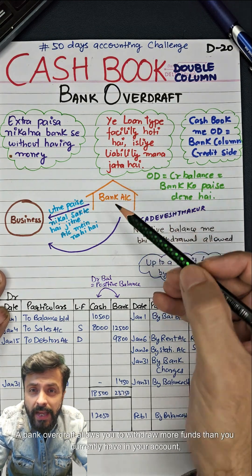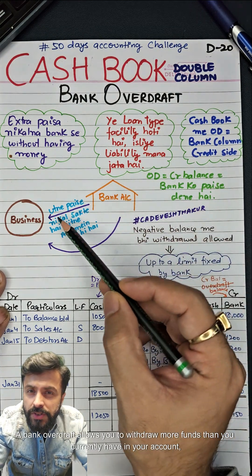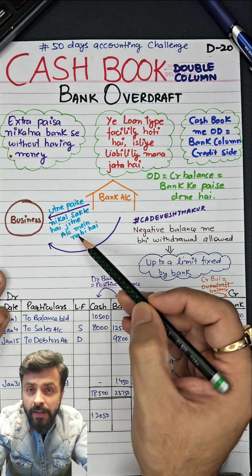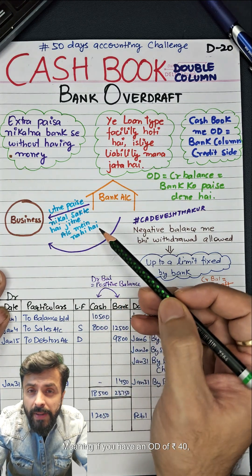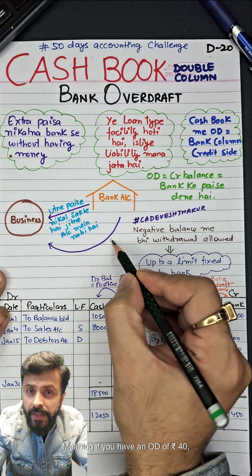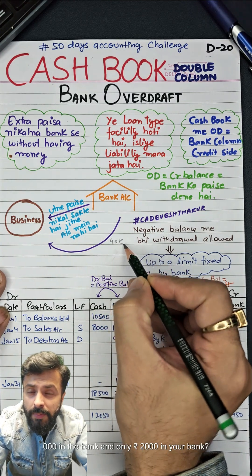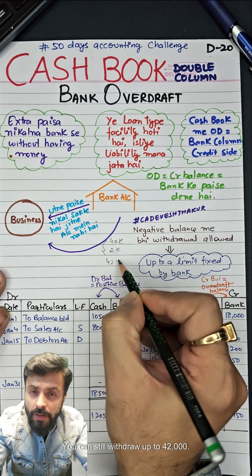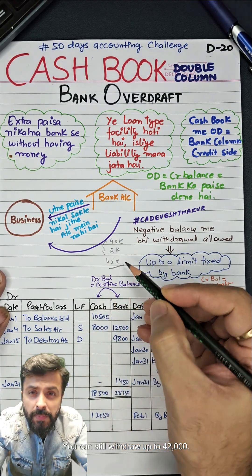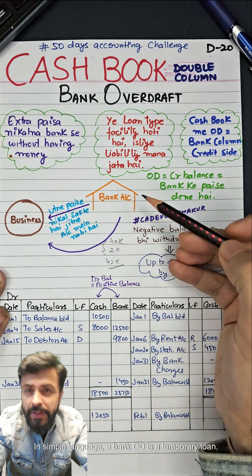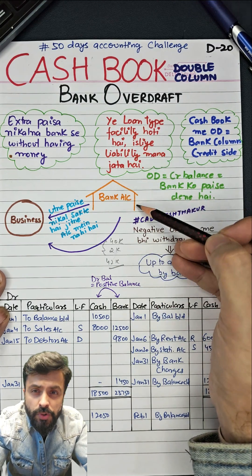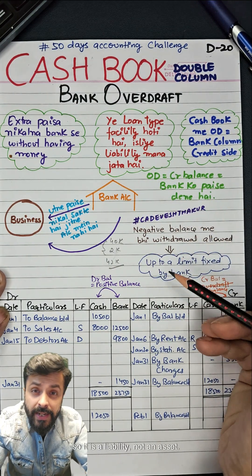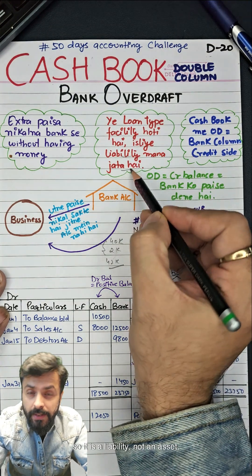A bank overdraft allows you to withdraw more funds than you currently have in your account, but only up to a specified limit set by the bank. For example, if you have an OD of RS40,000 in the bank and only RS2,000 in your account, you can still withdraw up to RS42,000. In simple language, a bank OD is a temporary loan from a bank that you can use for small daily needs, so it is a liability, not an asset.